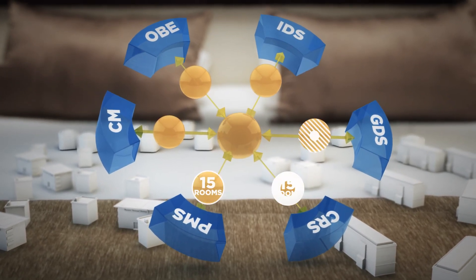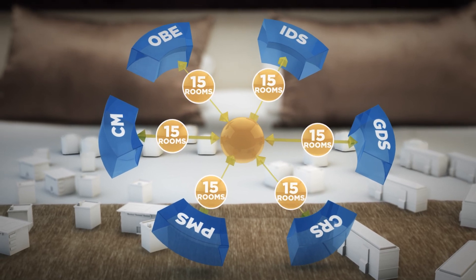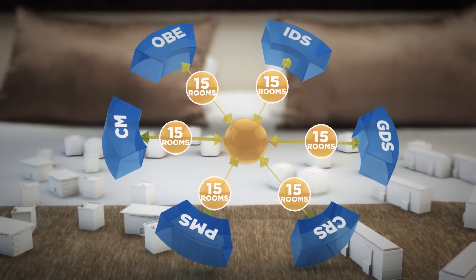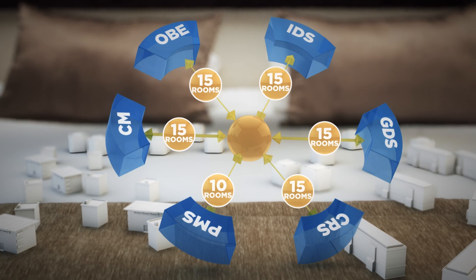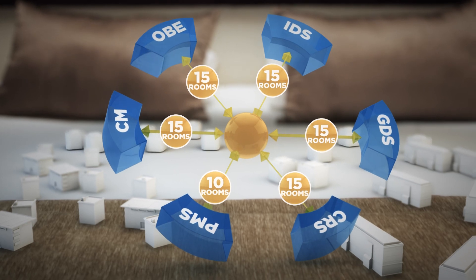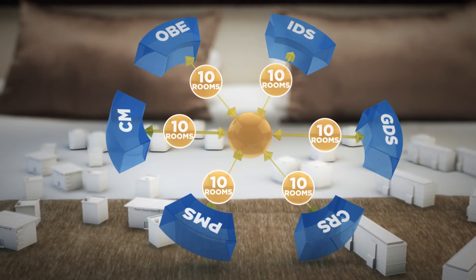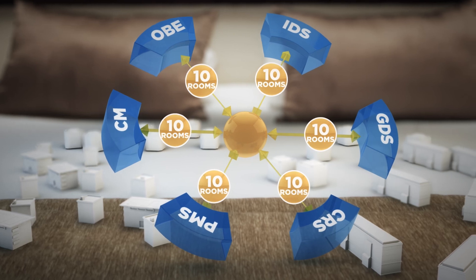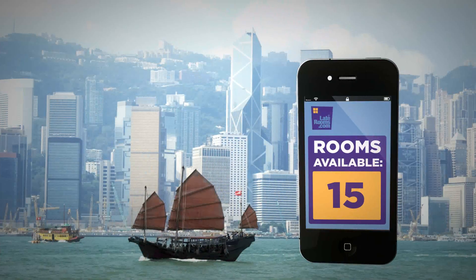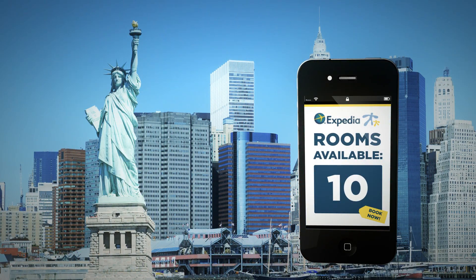For instance, if a booking of five rooms is made, the number of rooms available in the PMS of that hotel changes. The Smart Hotel Switch immediately passes on the new availability details to the other distribution systems, ensuring that they are all in sync. This prevents any overbooking.